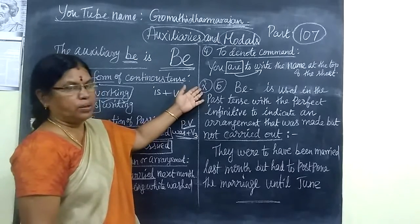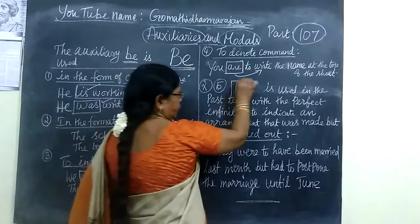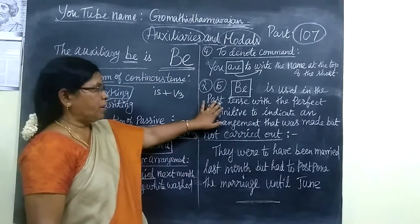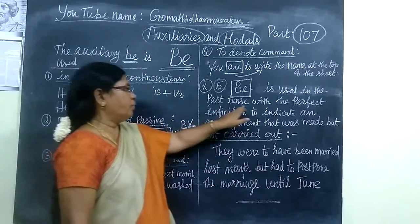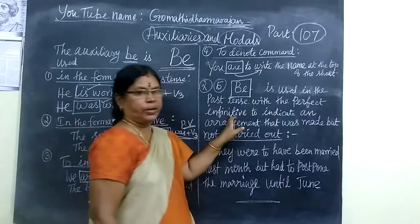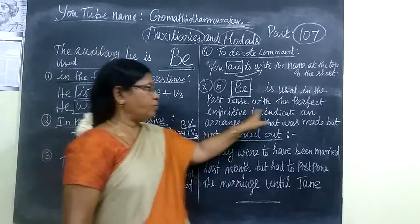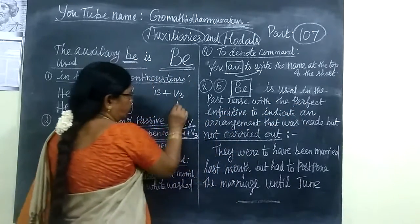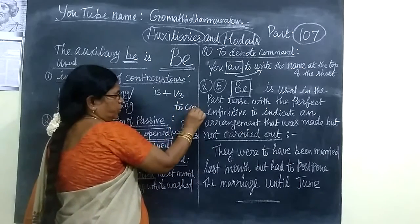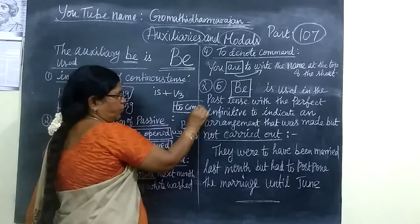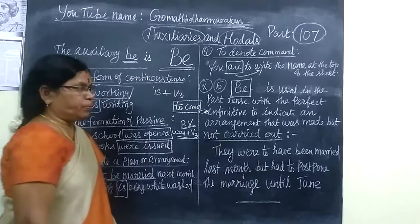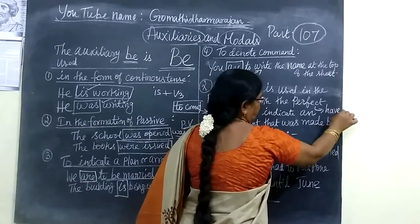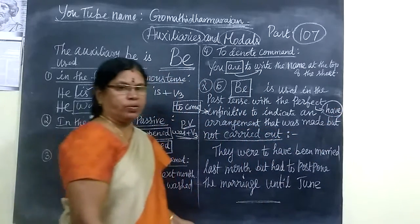Now come to the fifth one, and this is important. The be-form was or were, combined with the perfect infinitive. The perfect infinitive uses 'have' — we use 'have' in the perfect infinitive form. The perfect infinitive is 'to have' plus past participle. In the present form we are using 'have.'